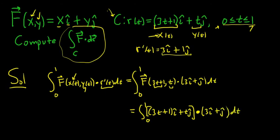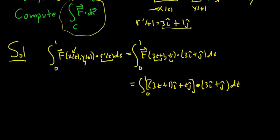So now we have to take the dot product. So in the dot product what you do is you just multiply the corresponding components and then you add. So it'll be 3t plus 1 times 3. So we have the definite integral from 0 to 1 of 3t plus 1 times 3 plus t times 1. And all of this is with respect to t.